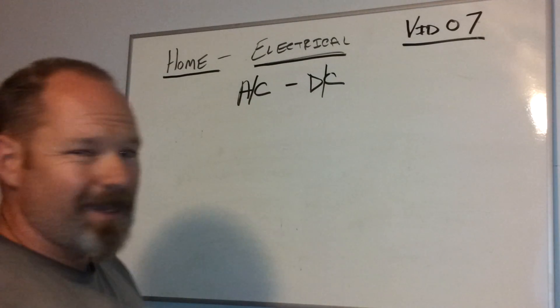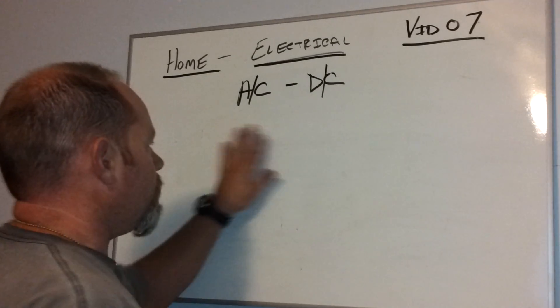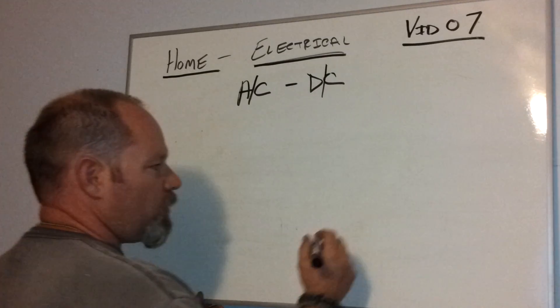The difference between AC, which is alternating current, and DC, which is direct current, is the flow of electrons.